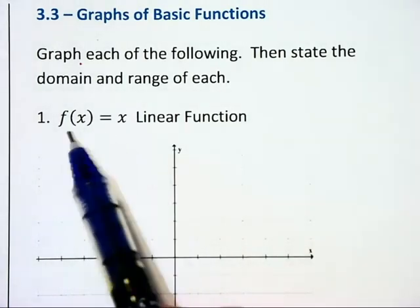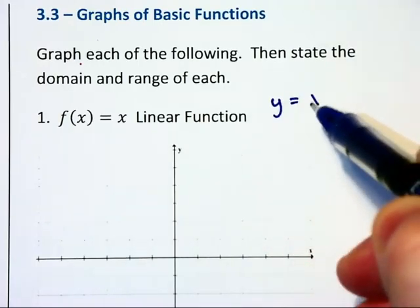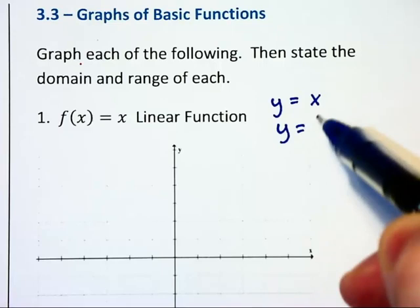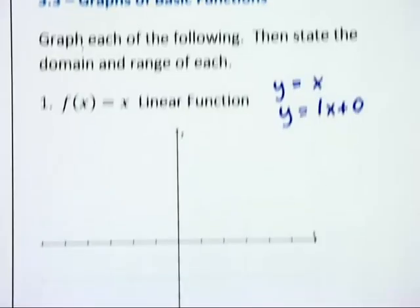The first one is the linear function where you have y equals x. Now if you think about that, that's the same as y equals 1x plus 0 if you were to write that in slope intercept form.